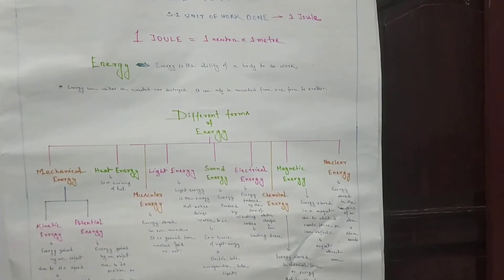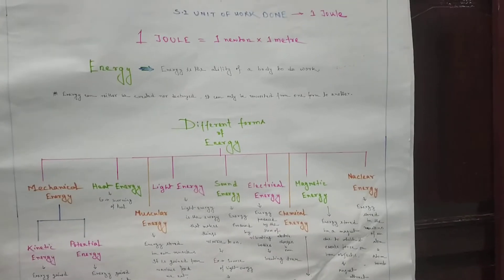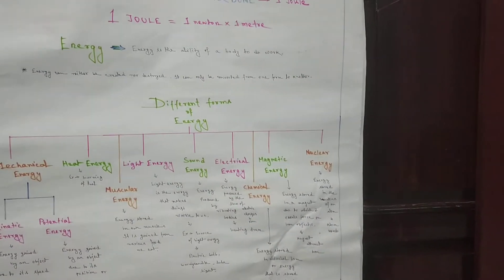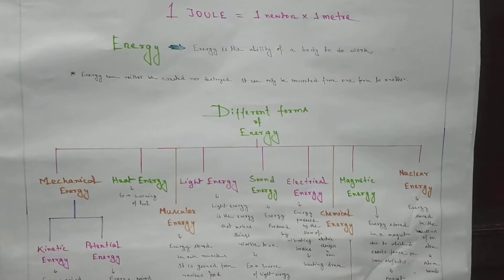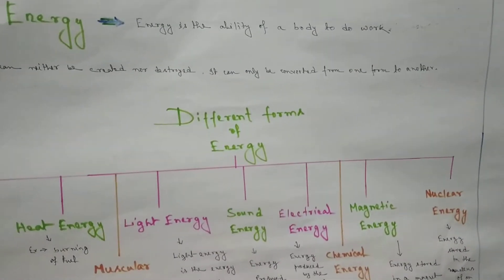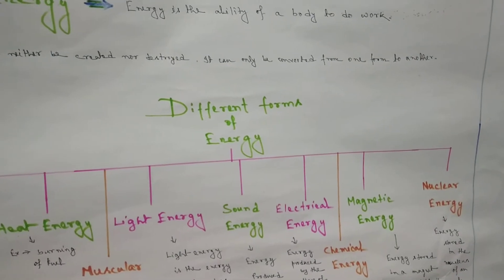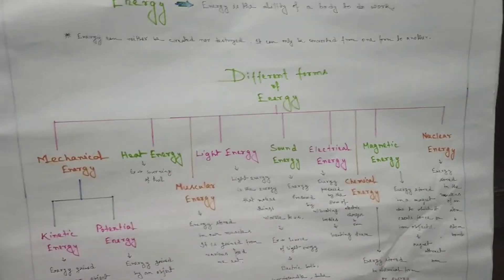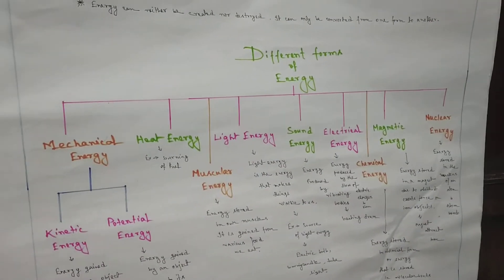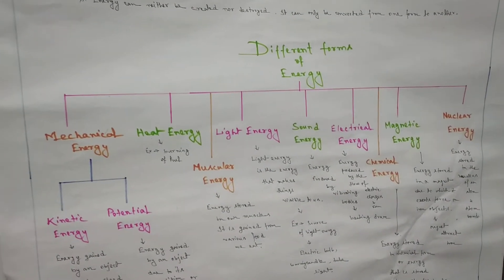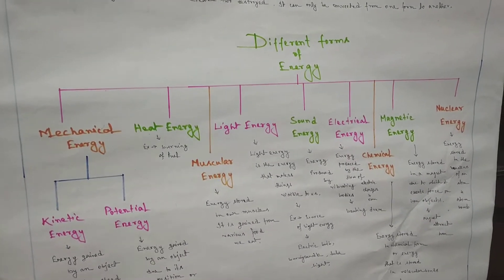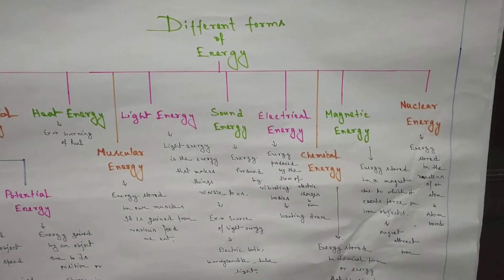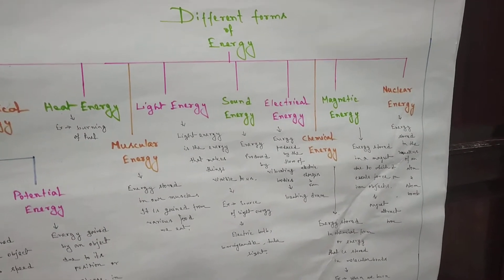Now, different forms of energy. As we already know, energy cannot be created or destroyed, but it can be converted into different forms. Energy can exist in forms like mechanical energy, heat energy, muscular energy, light energy, sound energy, electrical energy, chemical energy, and magnetic energy.